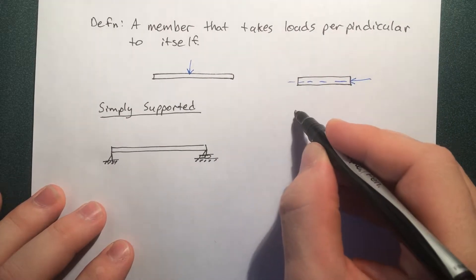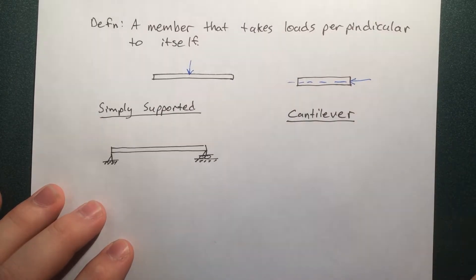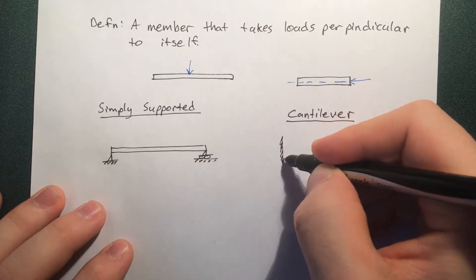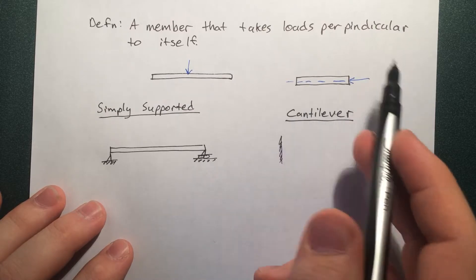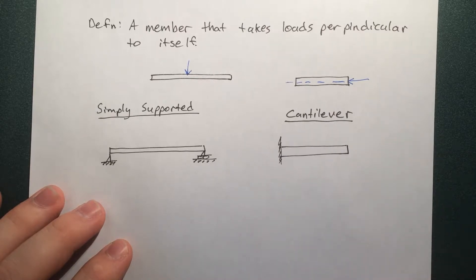And then you have a cantilever beam. So that's when we fix one end, usually in a wall or maybe attached to another axial bar that's stood upright. It just sticks out like that.